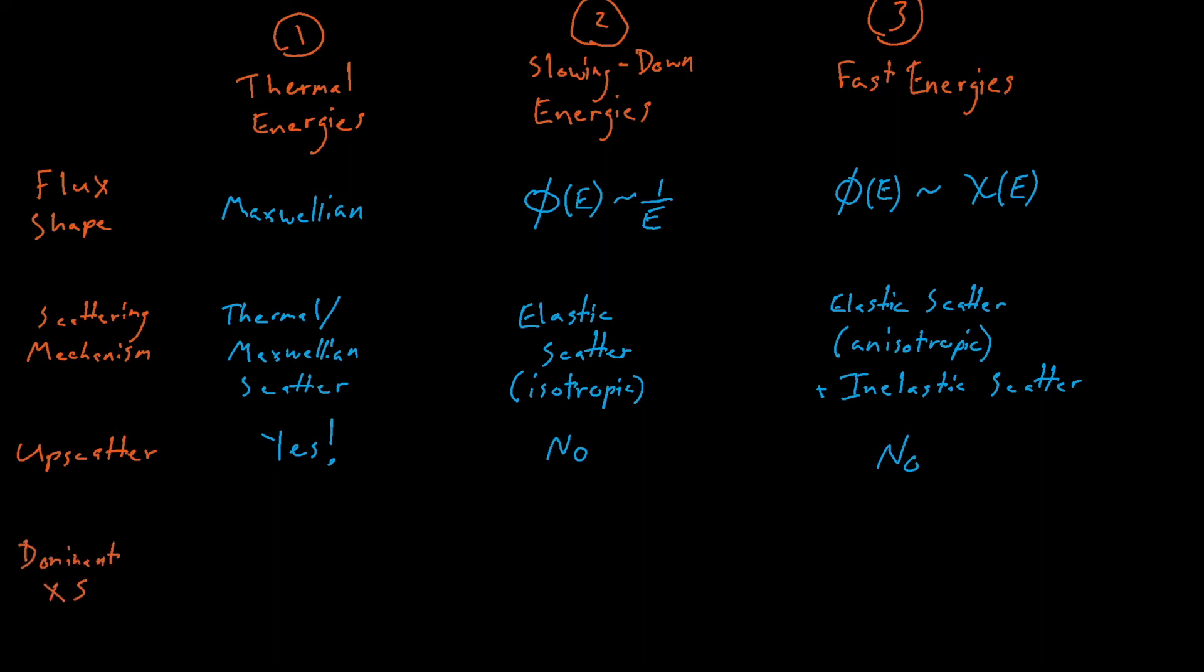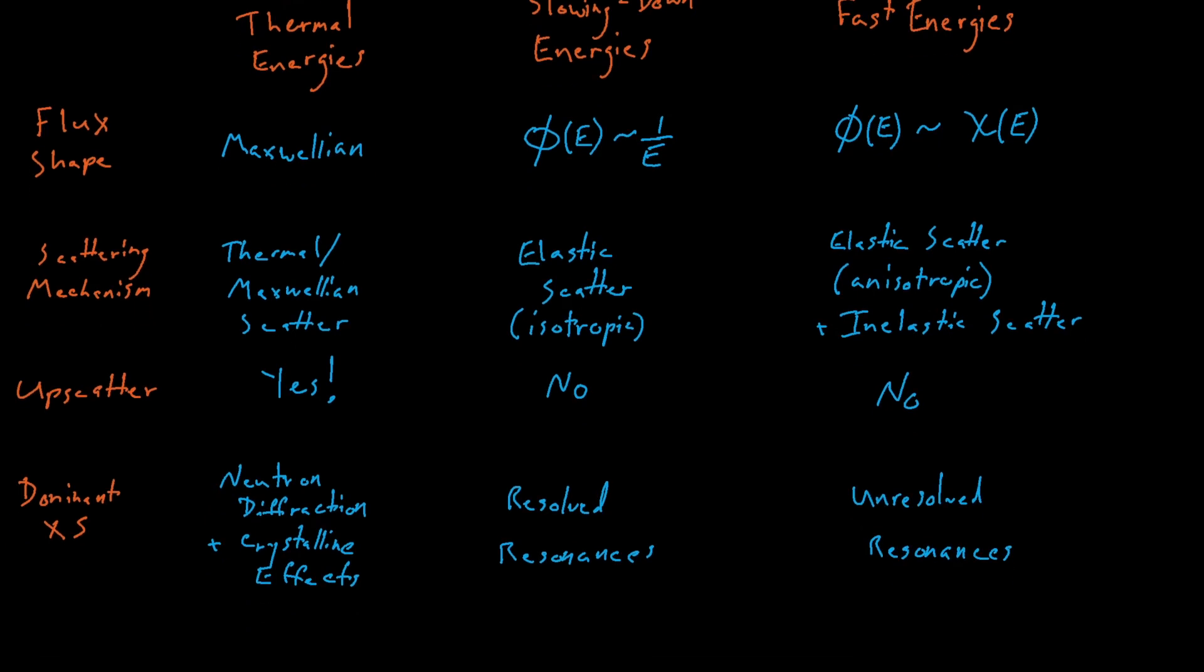Lastly, what kinds of cross-sections dictate the shape of the flux for each energy regime? For thermal energies, we are of course influenced by the 1 over V cross-section behavior, but we are actually also influenced by molecular effects. At these energies, the energy of the bonds between molecules is actually very similar to the energy of our neutrons, so molecules or even crystalline structures of atoms will actually diffract neutrons, making them behave like waves instead of particles. In the world of nuclear data, S alpha beta cross-sections describe how this diffraction can change the thermal cross-sections of different materials based on the molecular structure of those materials. At slowing down energies, our flux is strongly influenced by resolved resonances, which is something we'll discuss more in the next lecture. In the fast energy range, our flux spectrum is influenced by fast energy cross-sections and by unresolved resonances.